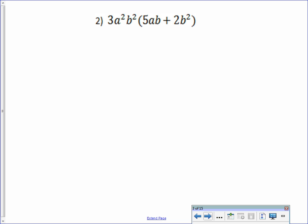For this one, this is just a problem where we need to distribute. The problem is, what we're distributing, we have to follow the multiplication rules. So 3 times 5 is 15, a squared times a is a cubed, and b squared times b is b cubed. And that's the first term. The second term is 6, because 3 times 2 is 6. So 3 times a squared,